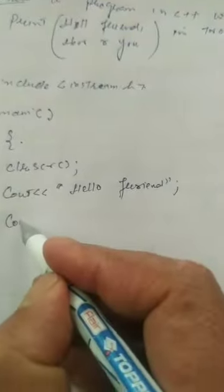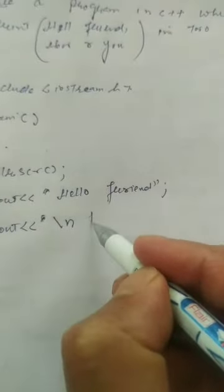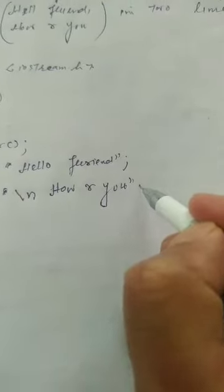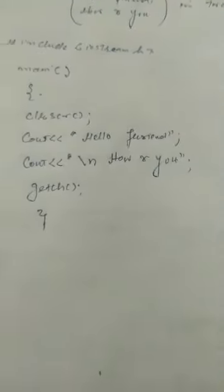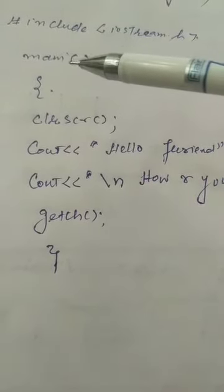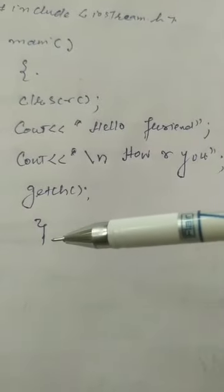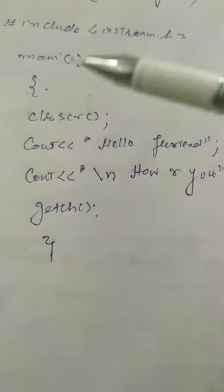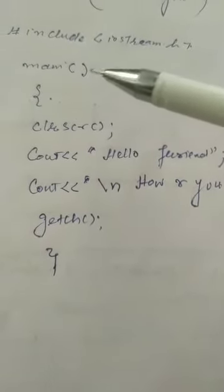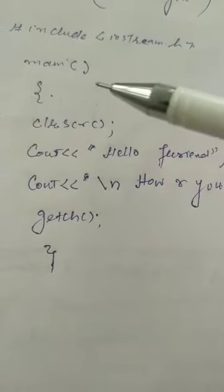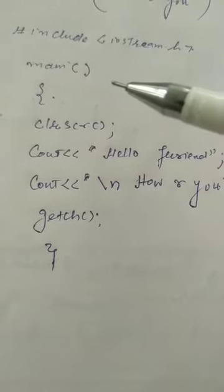Then we use cout to print 'Hello Friend'. The main function starts from the opening curly bracket and the closing curly bracket ends the body of the main function. Whatever is written inside these two brackets will be executed. First, clrscr() runs as an inbuilt function of C++ to clear the screen so nothing is written on it.